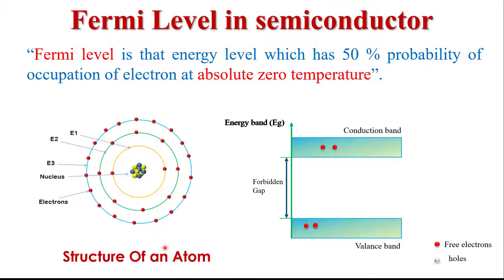Atoms are made up of three small particles: electron, proton, and neutron. Electrons are negatively charged particles whereas protons are positively charged particles. Neutrons have no charge. These protons and neutrons make a nucleus which exists at the center of the atom.